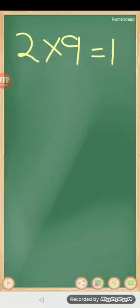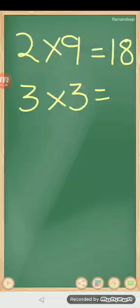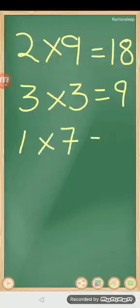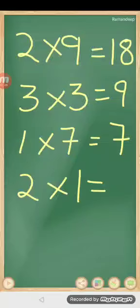Okay, then two nines are... yes, two nines are eighteen. Three threes are... three threes are... yes, very good, it is nine. One sevens are...